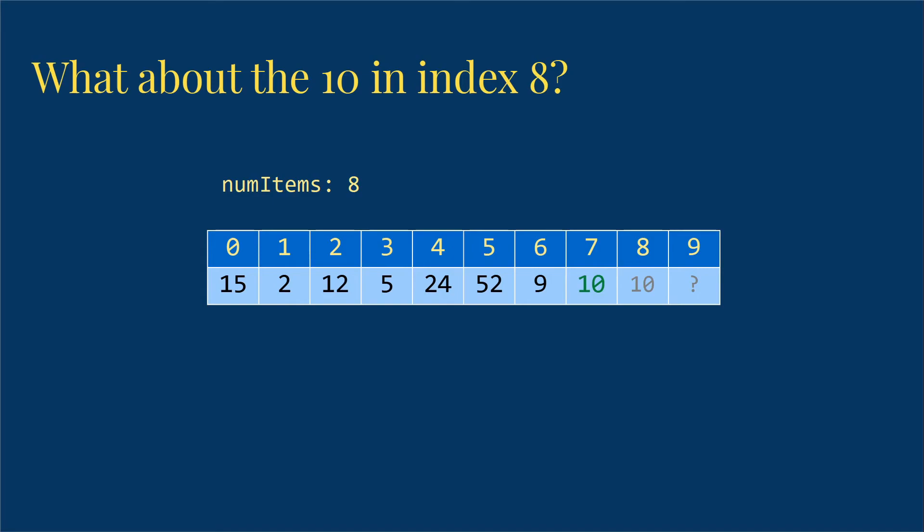And everything we do with the list will be limited by that num items value. So we won't ever look at index 8 unless we put something else in that index. So in general, we don't need to do anything about the value.